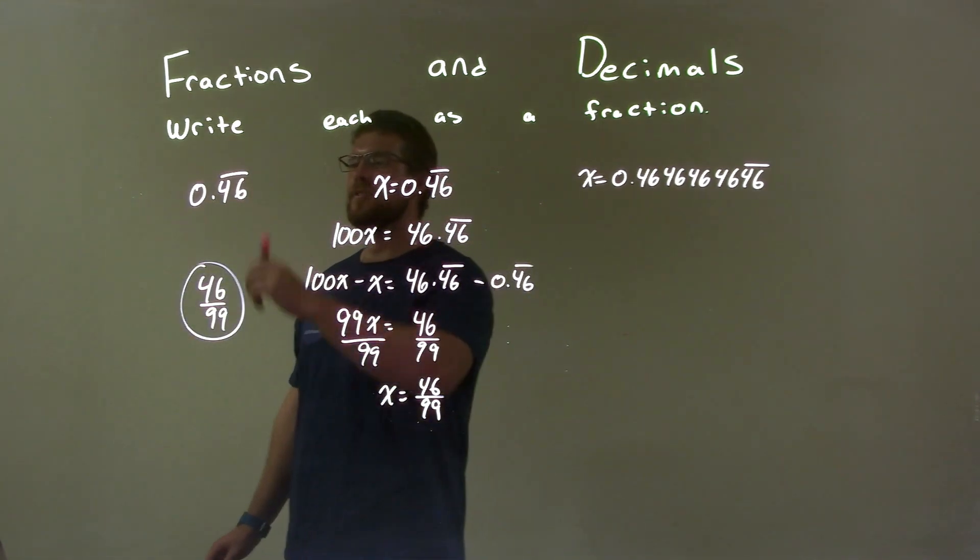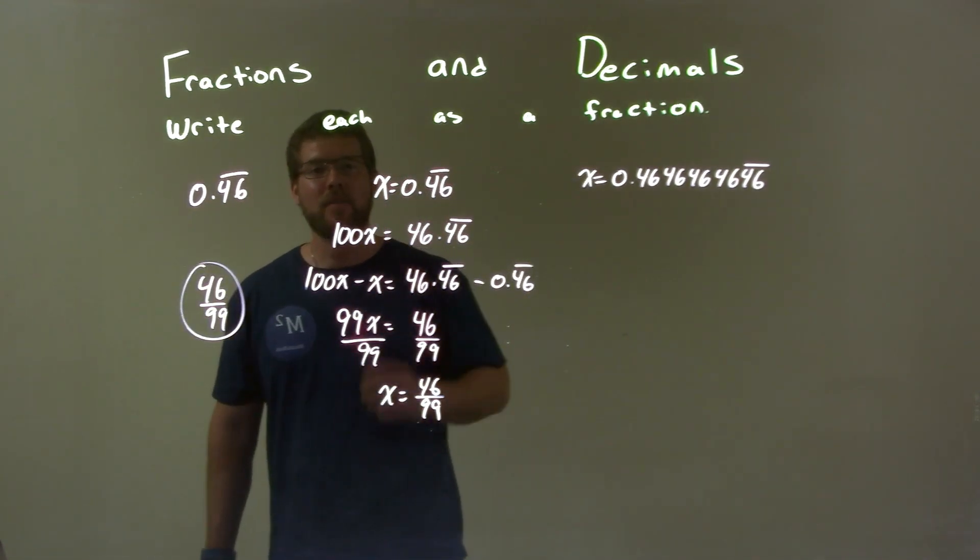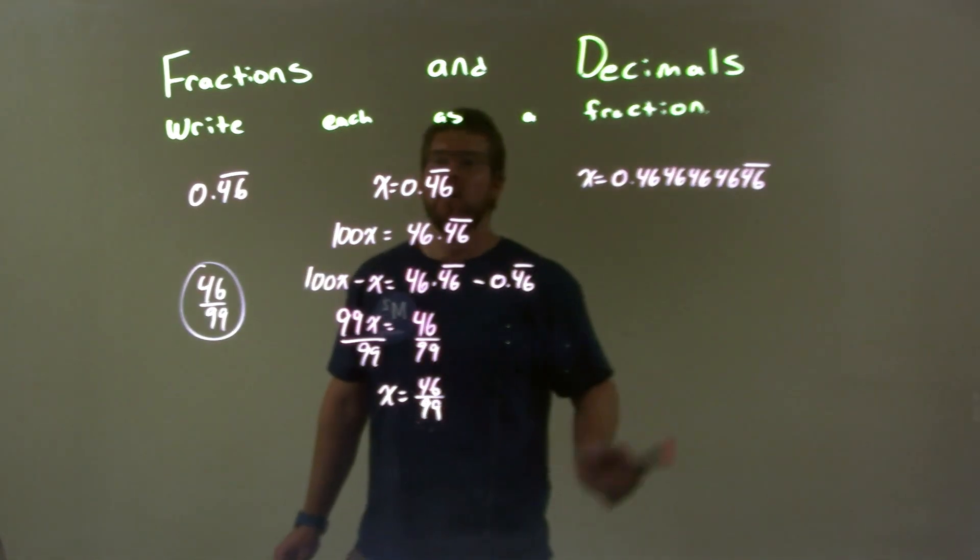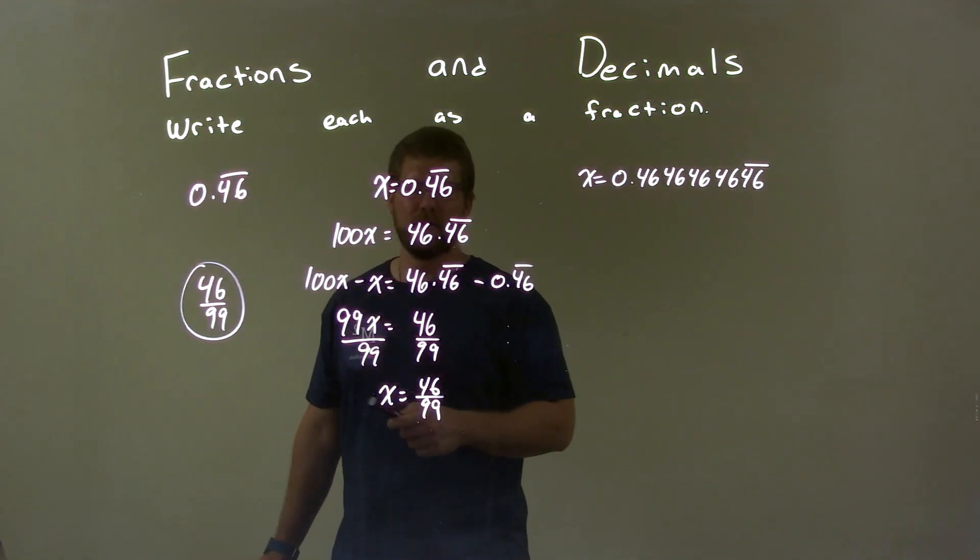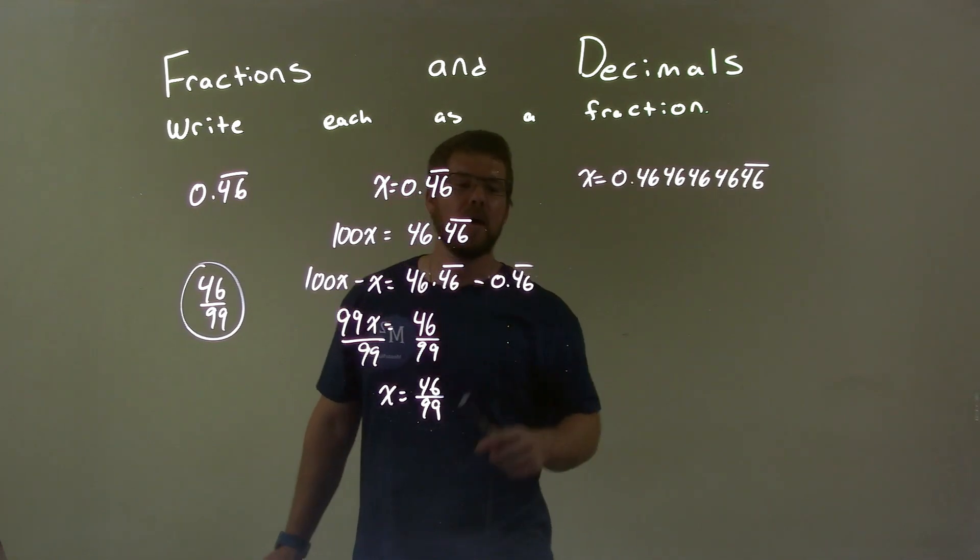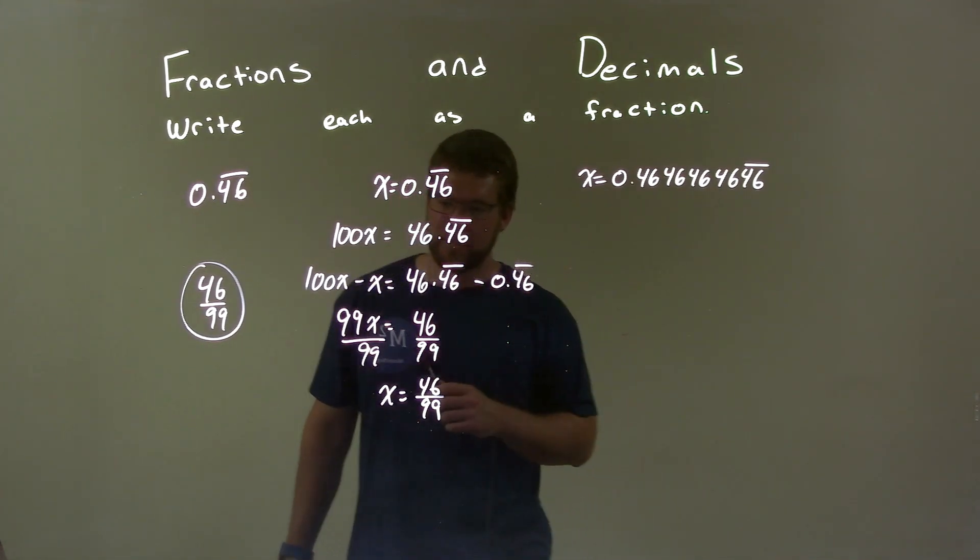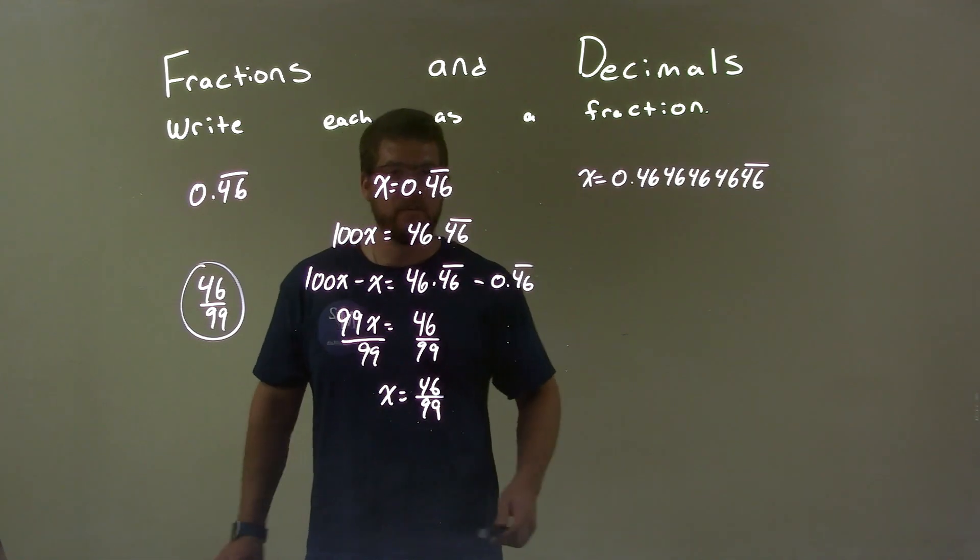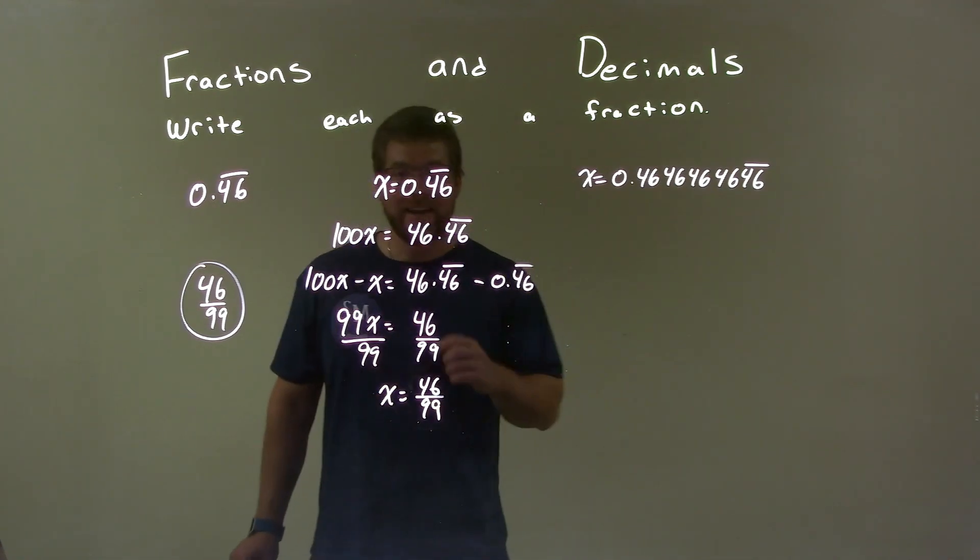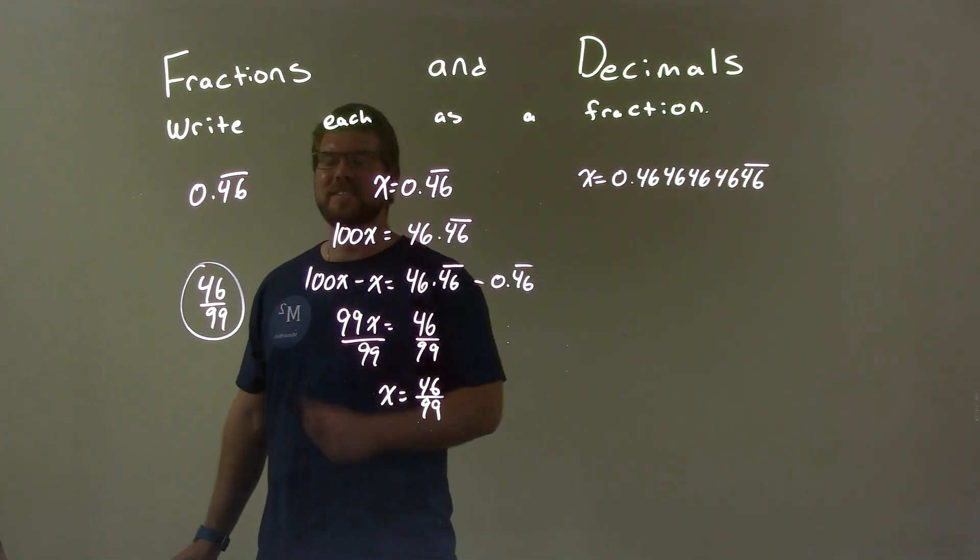So quick recap. We're given 0.46 repeating, and we have to write that as a fraction. I wrote x equal to 0.46 repeating, then 100x equals 46.46, multiply that by 100. Did 100x minus x, which is 46.46 repeating minus 0.46 repeating. Simplified that, got 99x equals 46. Divide by 99, and got x equals 46 over 99. Nothing else I can do to simplify it. So again, our final answer is just 46 over 99.